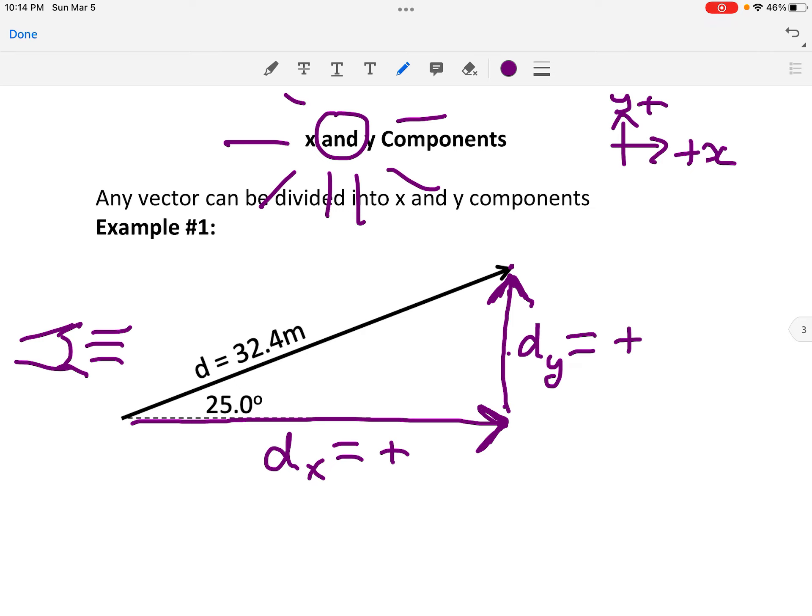So both of these components are positive, but how do I know how big they are? That brings you back to your good old friend, Sokotoa. I hope you didn't forget him from grade 10 math. Sokotoa! Sokotoa tells you the components or the sides of a right-angle triangle. And is this a right-angle triangle? Oh, yes, it is, because x and y are always 90 degrees to each other by definition, right? X and y picture a graph. X and y are always exactly 90 degrees to each other. So this must be a 90-degree triangle with an angle theta right in there of 25 degrees.